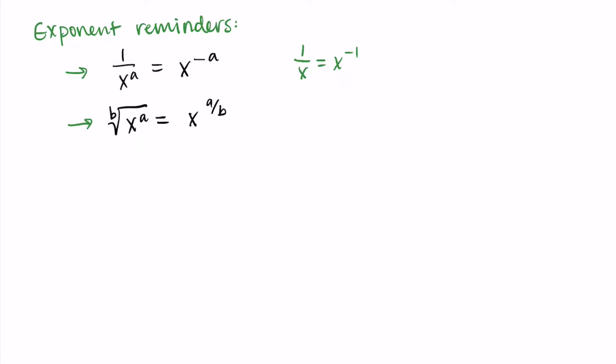To practice: one over x can be rewritten as x to the negative one. Three over x squared becomes three x to the negative two. The square root of x can be rewritten as x to the one-half power — because there's really a one inside the radical and a two outside, we just don't write those for simplicity. The third root of x squared becomes x to the two-thirds power.